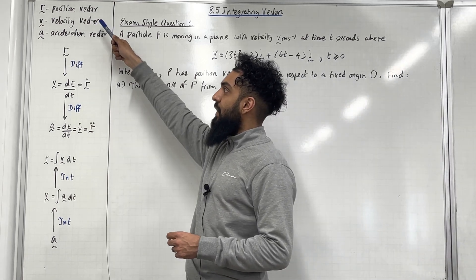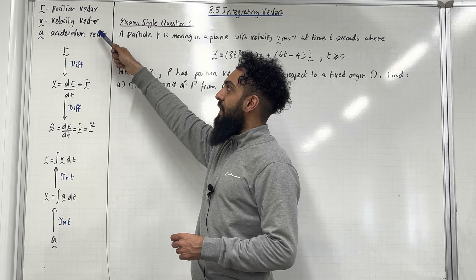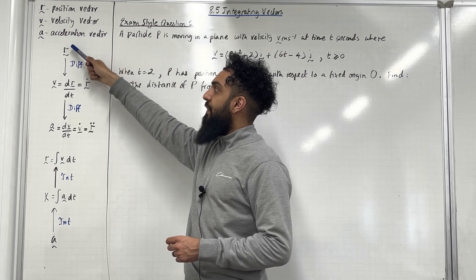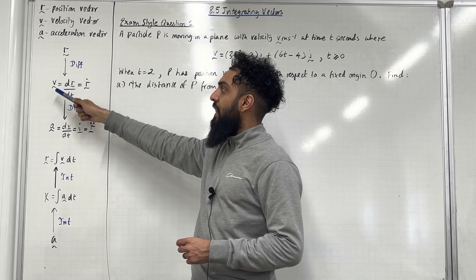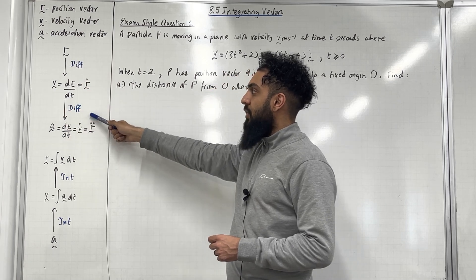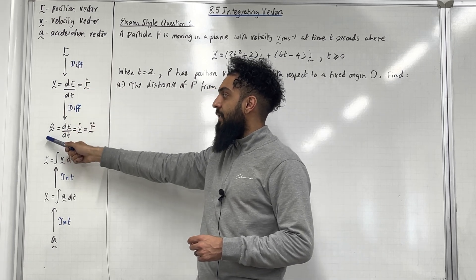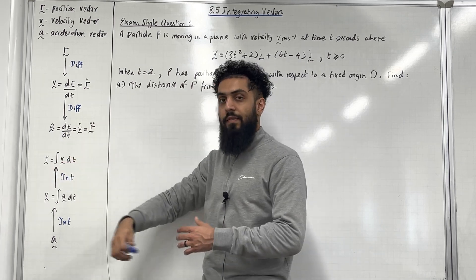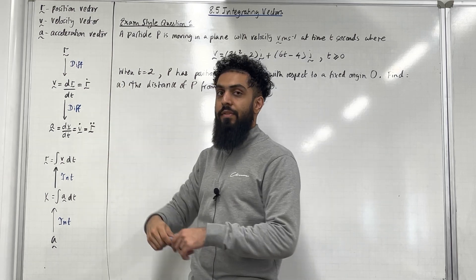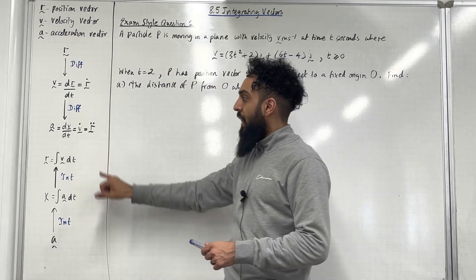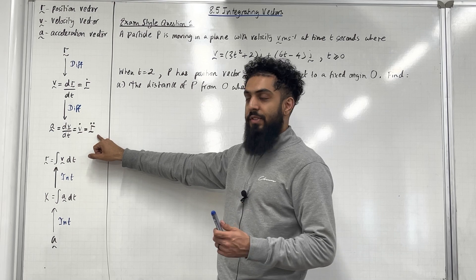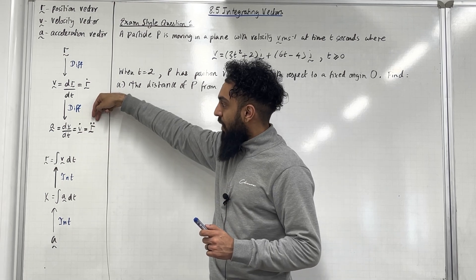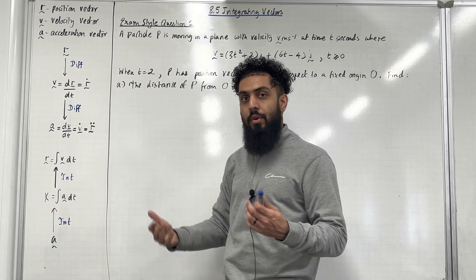R squiggle represents the position vector, V squiggle represents the velocity vector, and A squiggle represents the acceleration vector. If we differentiate the position vector, we get the velocity vector. If we differentiate the velocity vector, we get the acceleration vector. To find the acceleration vector from the position vector, we take the position vector and differentiate it twice. The notation represents the position vector differentiated twice, and the two dots on top denote the double derivative.